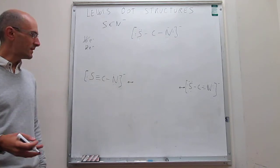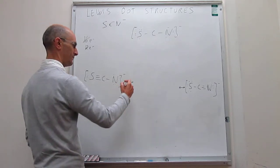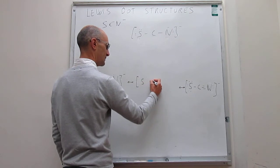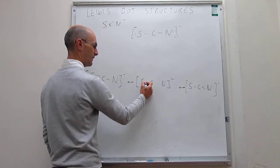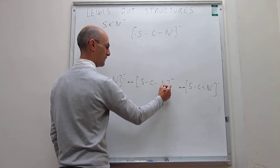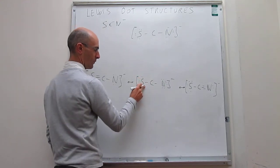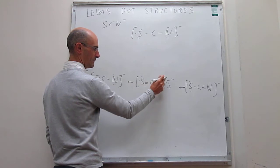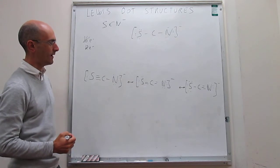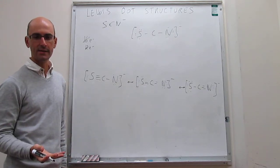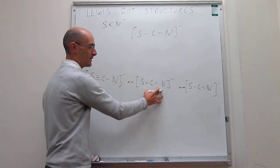There is an intermediate between these two in which you have double bonds to both sulfur and nitrogen — a sulfur-carbon-nitrogen structure where we take one lone pair from sulfur to form a double bond and one lone pair from nitrogen to form a double bond. In this case, all atoms also satisfy the octet rule, and that is also a legitimate Lewis dot structure.